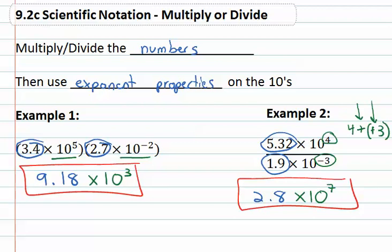So multiplying and dividing with scientific notation, quite straightforward. You multiply and divide the numbers then use the exponent properties on the tens.